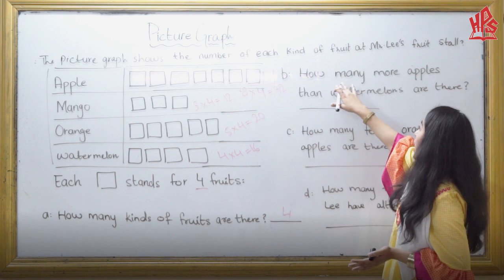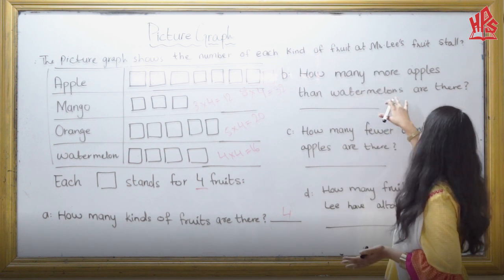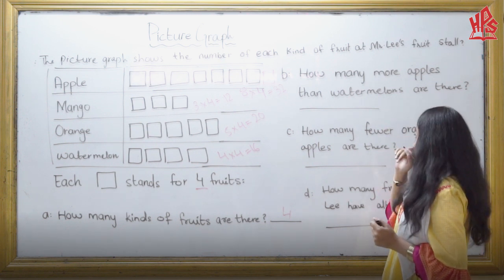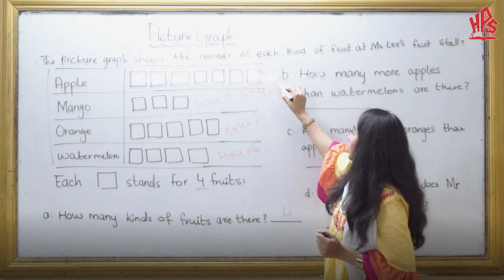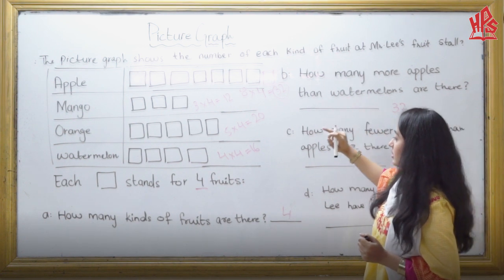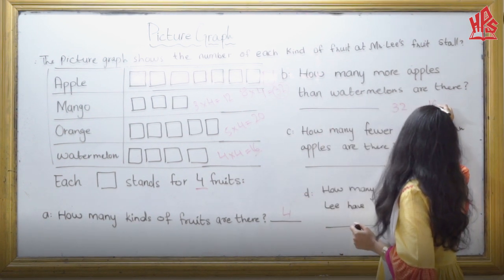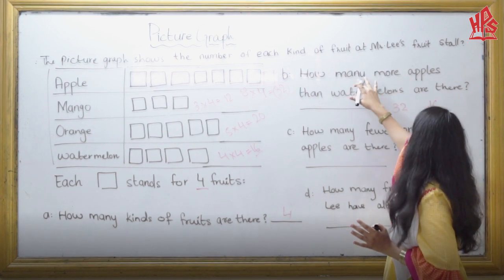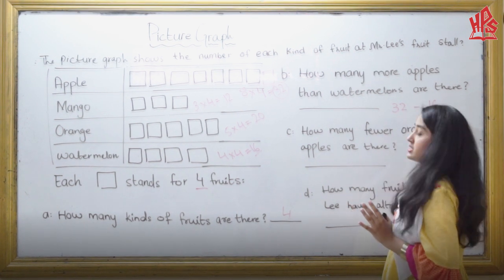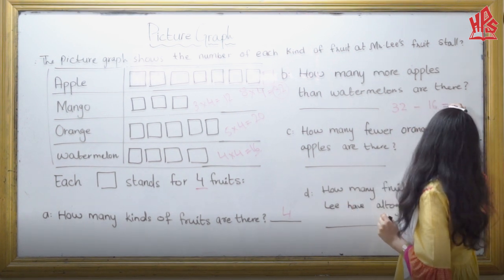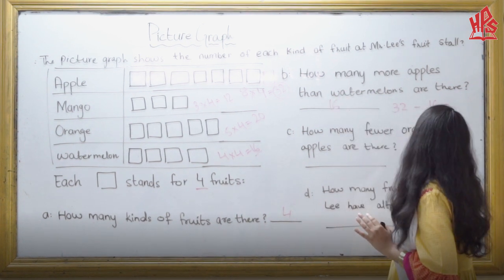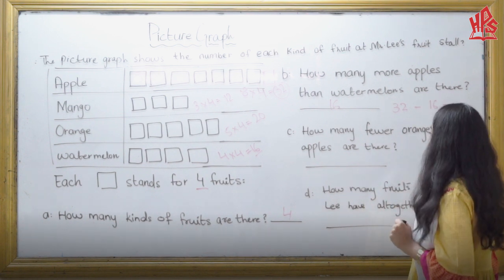Now part B: How many more apples than watermelons are there? First we see how many apples we have — 32 apples. And how many watermelons? 16. The question says 'how many more,' which means we do subtraction. So 32 minus 16 is 16. We have 16 more apples than watermelons.